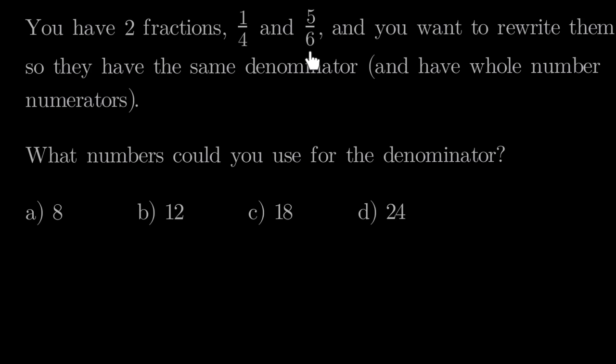Here are our fractions — 1/4 and 5/6 — and we want to rewrite these fractions to have new denominators. We currently have a 4 and a 6 as our denominators. Can we just put anything? Like maybe 5 — could we change them both to have 5 as the denominator? The answer is no. We have to pick a multiple of 4 and 6, some number that we can multiply 4 or 6 by and get that number as an answer.